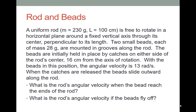This first example has a pretty large setup. We have a uniform rod; you're given the mass of the rod and its length, and we're told it's free to rotate about an axis perpendicular to its length through its center. There are two small beads of the same mass mounted to grooves along the rod. They're initially held in place 16 centimeters from the axis of rotation, but the catches are going to release so the beads can slide outward. Before that happens, the angular velocity of the rod-bead collection is 13 radians per second, and we want to know what's the new angular velocity when the beads are at the end of the rod, or when they fly off completely.